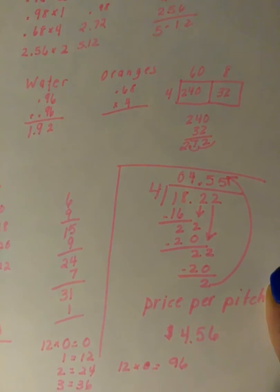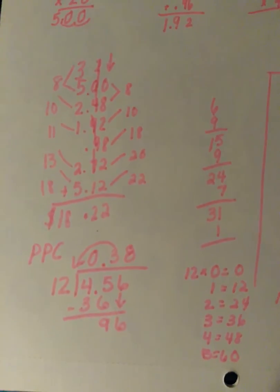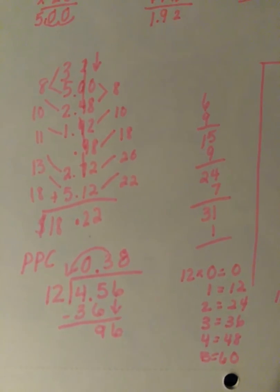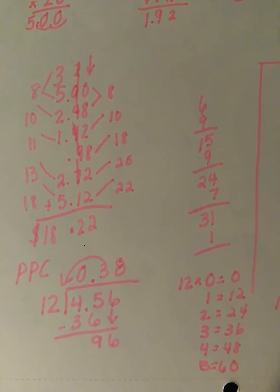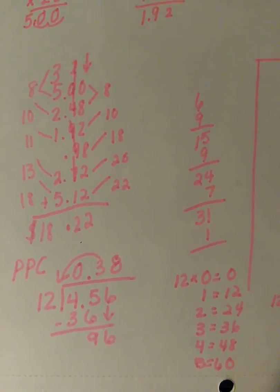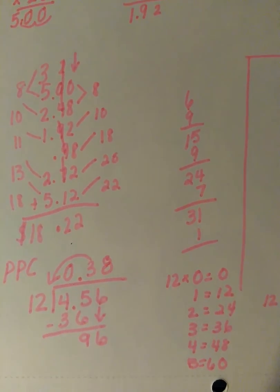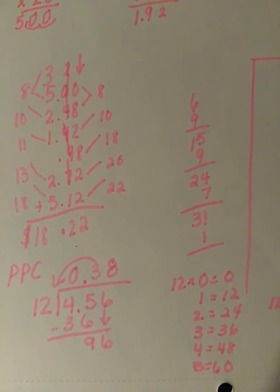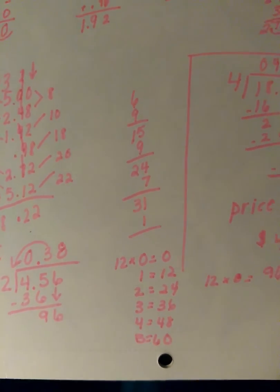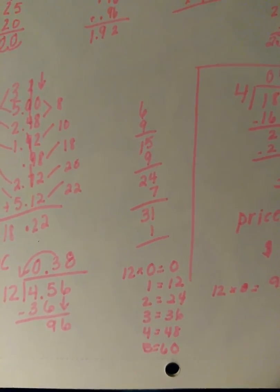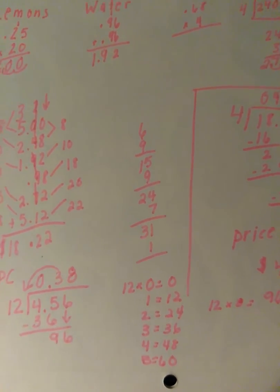Once I have my price per pitcher, I could divide that number by 12 which gives me my price per cup. That's the PPC. So I do the same type of thing that I did before. You see I have my 12 tables on the right there. And I figured out the price per cup and it actually ended up being exactly $0.38.